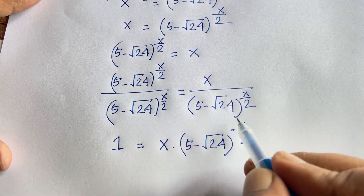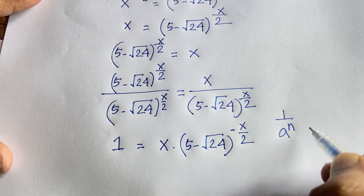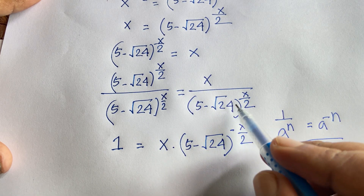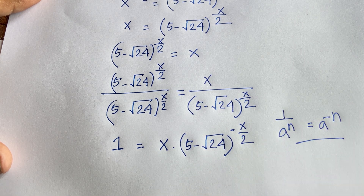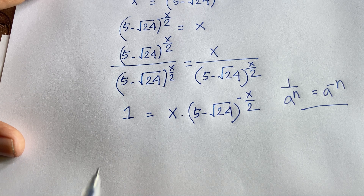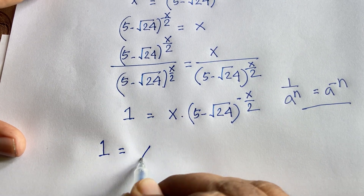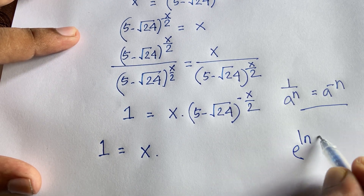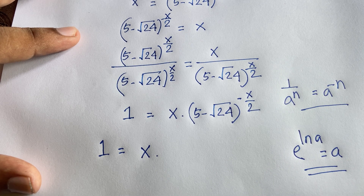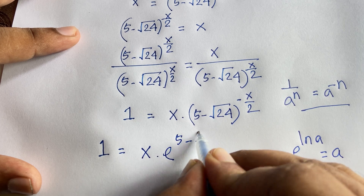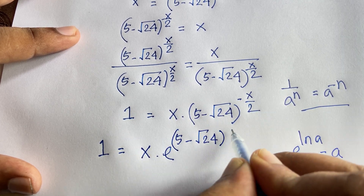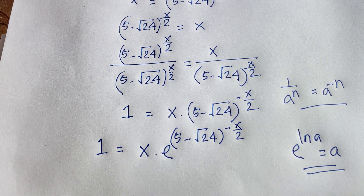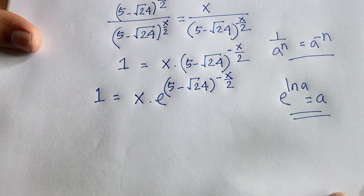Because of the exponential rule: 1 over a to the power n equals a to the power minus n. According to this rule, 1 over (5 minus square root 24) to the power x over 2 becomes (5 minus square root 24) to the power minus x over 2. So we have 1 equals x times (5 minus square root 24) to the power minus x over 2. Now I want to use the Lambert W function, so I apply e to the power ln a equals a.